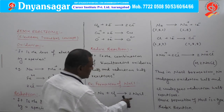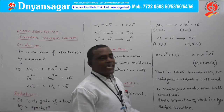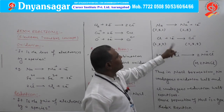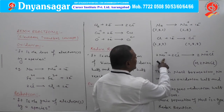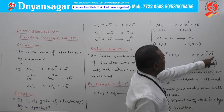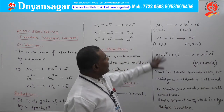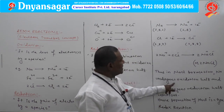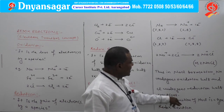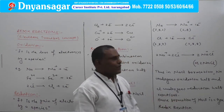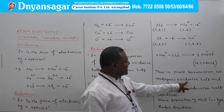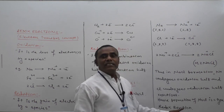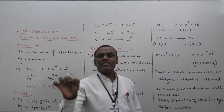Thus, sodium undergoes oxidation by loss of an electron and chlorine undergoes reduction by gain of an electron. Two Na⁺ ions and two Cl⁻ ions combine to form 2NaCl. So in the overall reaction 2Na + Cl₂ → 2NaCl, sodium undergoes the oxidation half reaction and chlorine undergoes the reduction half reaction. Hence, the formation of sodium chloride is a simple example of a redox type of reaction.